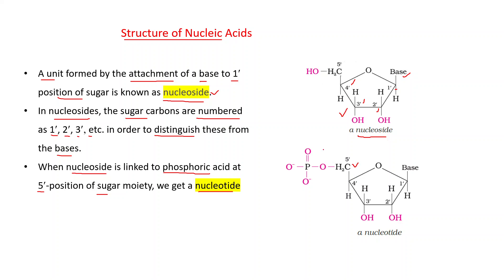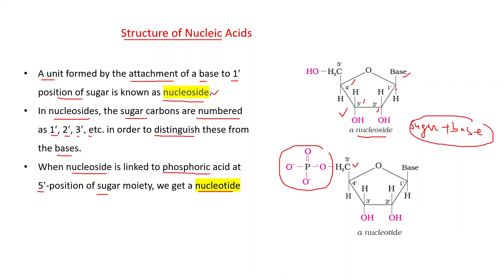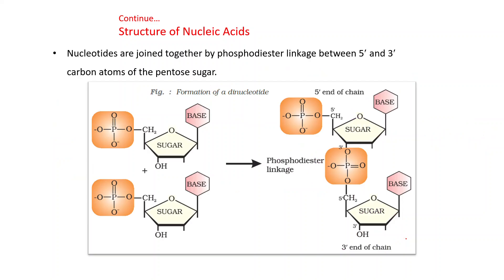This is the 5' carbon of the nucleoside and this is the phosphoric acid part. Simply, a nucleoside contains sugar with base. When to this nucleoside — sugar plus base — we add the phosphoric acid part, we get a nucleotide. Nucleotides are joined together by phosphodiester linkage between the 5' and 3' carbon atoms of the pentose sugar.